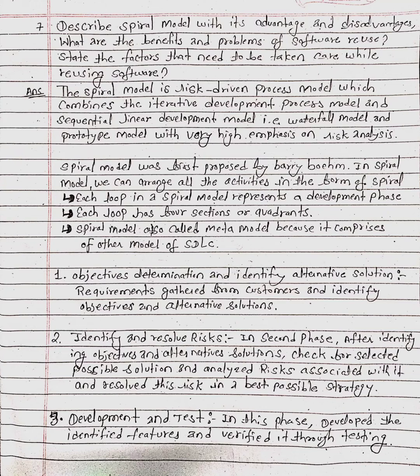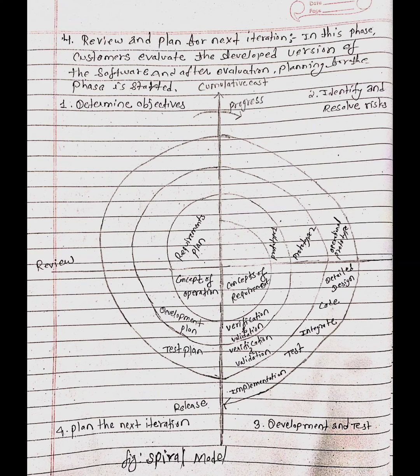Third phase: development and test. In this phase, develop the identified features and verify them through testing. Fourth phase: review and plan for the next iteration. Customers evaluate the development version of the software, and after evaluation, planning for the next phase is started. This is the figure of the spiral model.